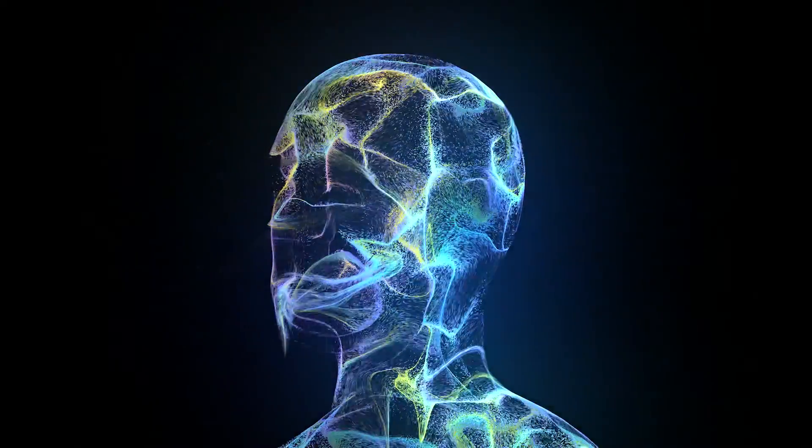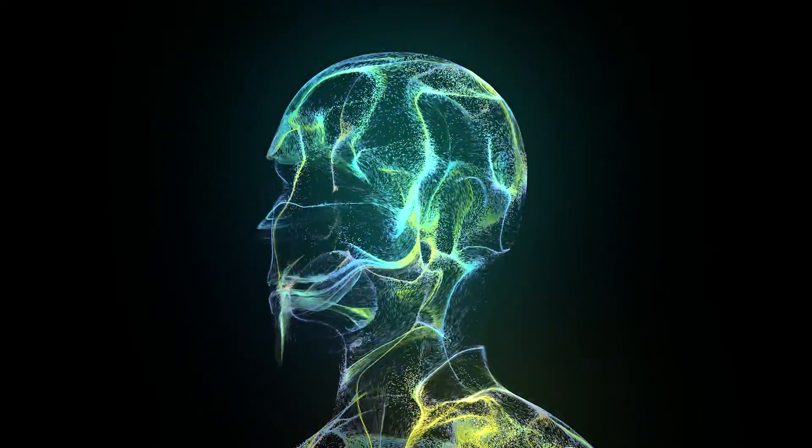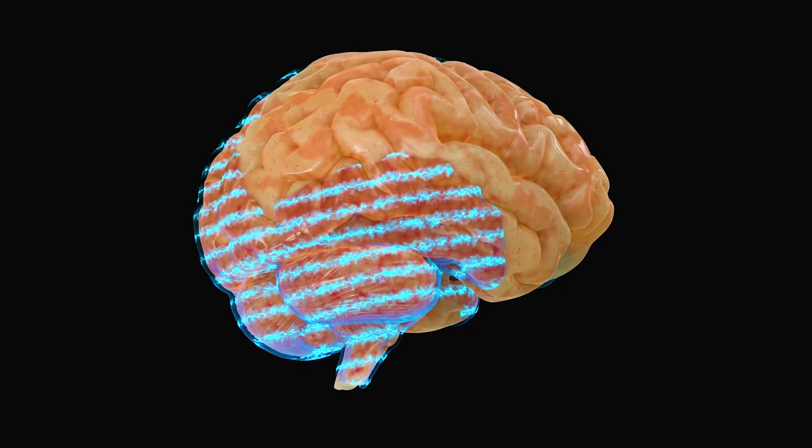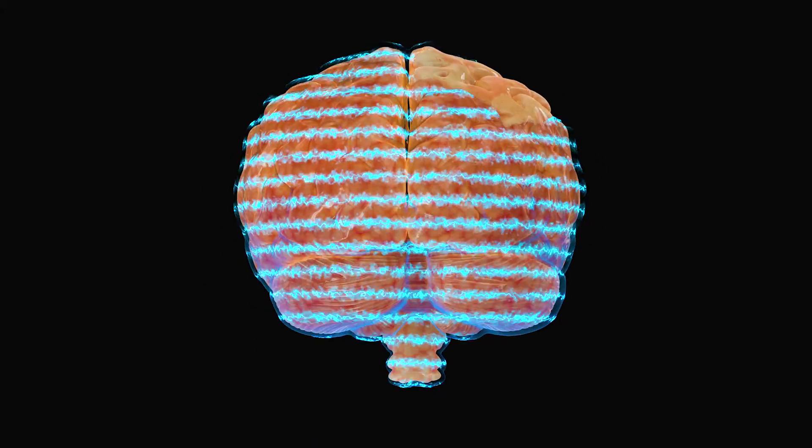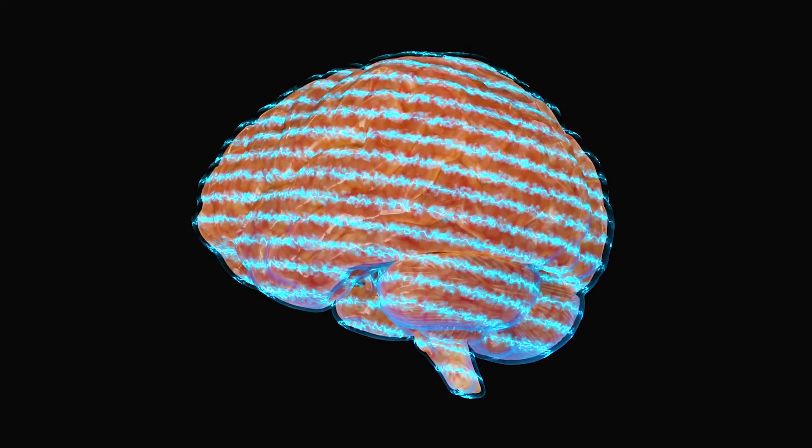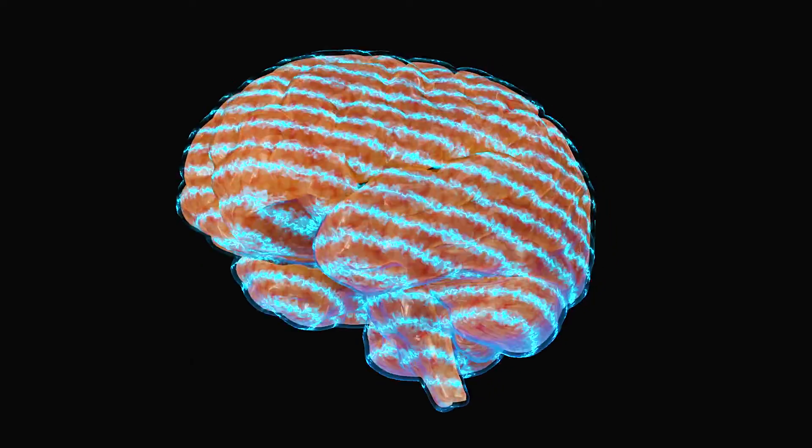The second step, digital modeling. With the data obtained from the scan, a digital replica of the brain is crafted. When this model operates on a cutting-edge supercomputer, it's theorized to operate just like the original brain.